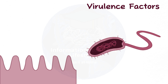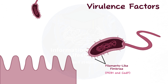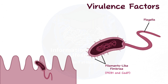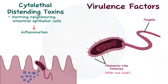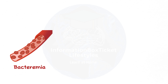Firstly, it possesses cell surface proteins including PEB1 and CAD-F, as well as filaments resembling fimbriae, which aid in its attachment to the mucosa of the colon and small intestine. There, Campylobacter jejuni drills into the mucosa with the help of its long flagella and spiral structure, releasing poisons known as cytolethal distending toxins. These toxins exacerbate the inflammation by harming neighboring intestinal epithelial cells. A toxic megacolon can develop when the colon dilates due to severe inflammation and injury.